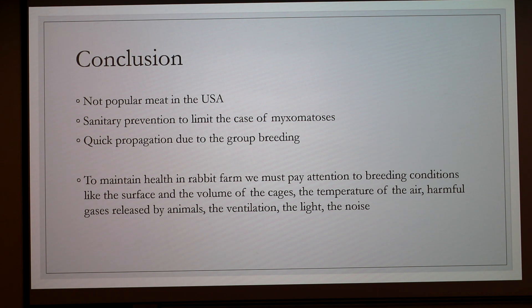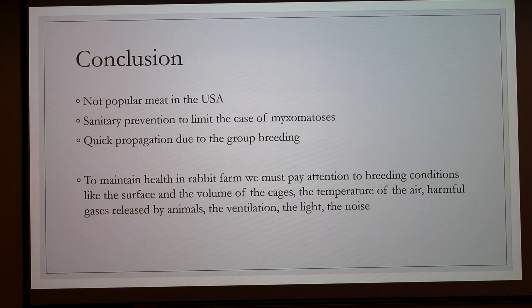To maintain health in a rabbit farm, we have to pay attention to breeding conditions like the surface and volume of cages, the temperature of the air, the harmful gases caused by the animals, ventilation, lights, and noise. All of these elements help keep rabbits comfortable and limit the number of diseases.